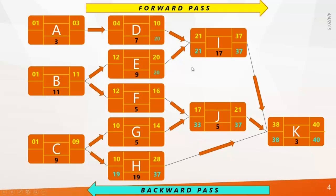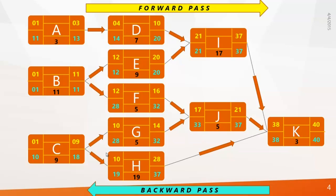At the third level in the backward pass, use the same equations to find late start and late finish. At the final level, look at activity C — it is connected to G and H, which have late starts of 28 and 19. Remember: in the forward pass we chose the longest duration and added 1; in the backward pass we choose the shortest duration and deduct one. So the late finish of activity C becomes 19 minus 1, which is 18, and the late start of C is 18 minus 9 plus 1, which is 10. Calculate B and A the same way.